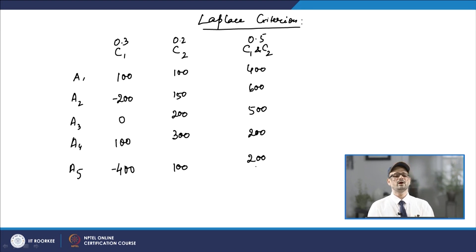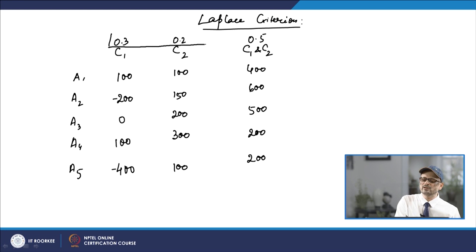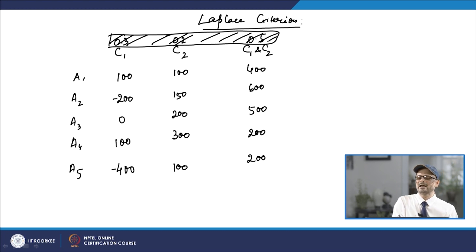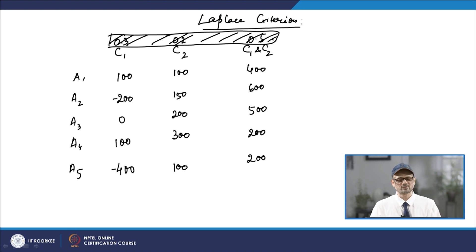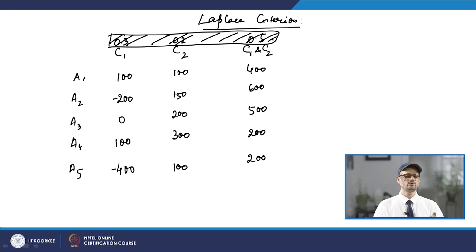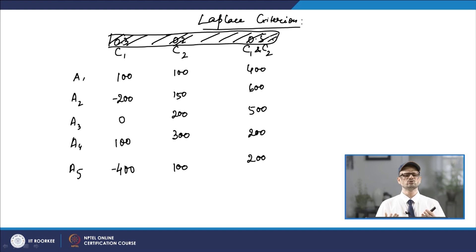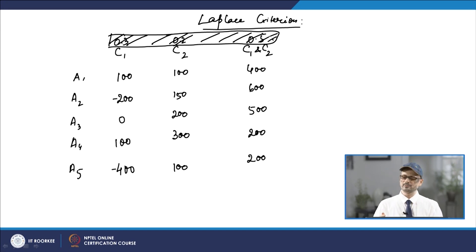When we discuss decision under uncertainty, these probability values are not given. Using the Laplace criterion, we find the average profit for all alternatives A1 through A5, assuming equal probability for each future state C1, C2, and both C1 and C2.